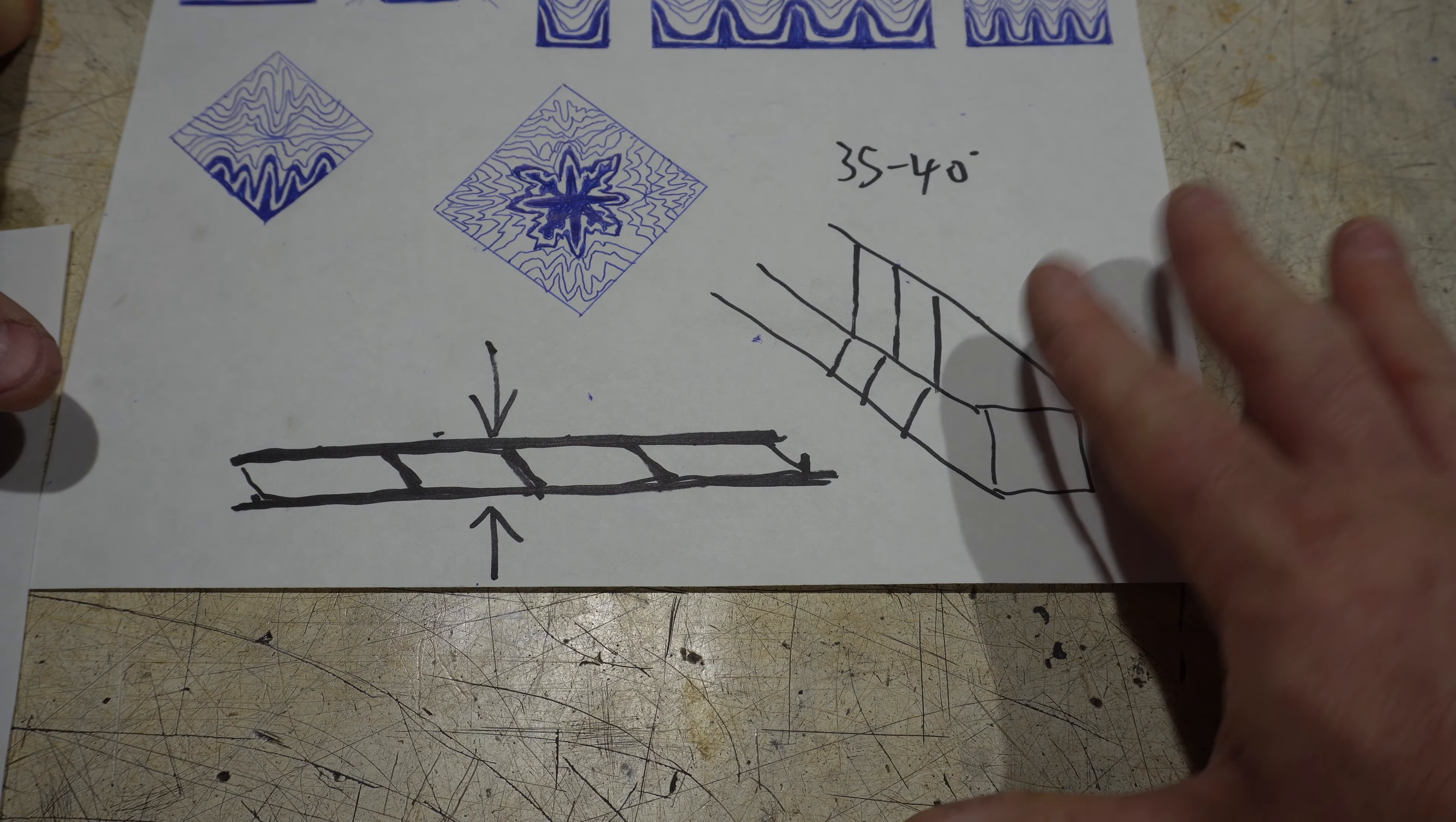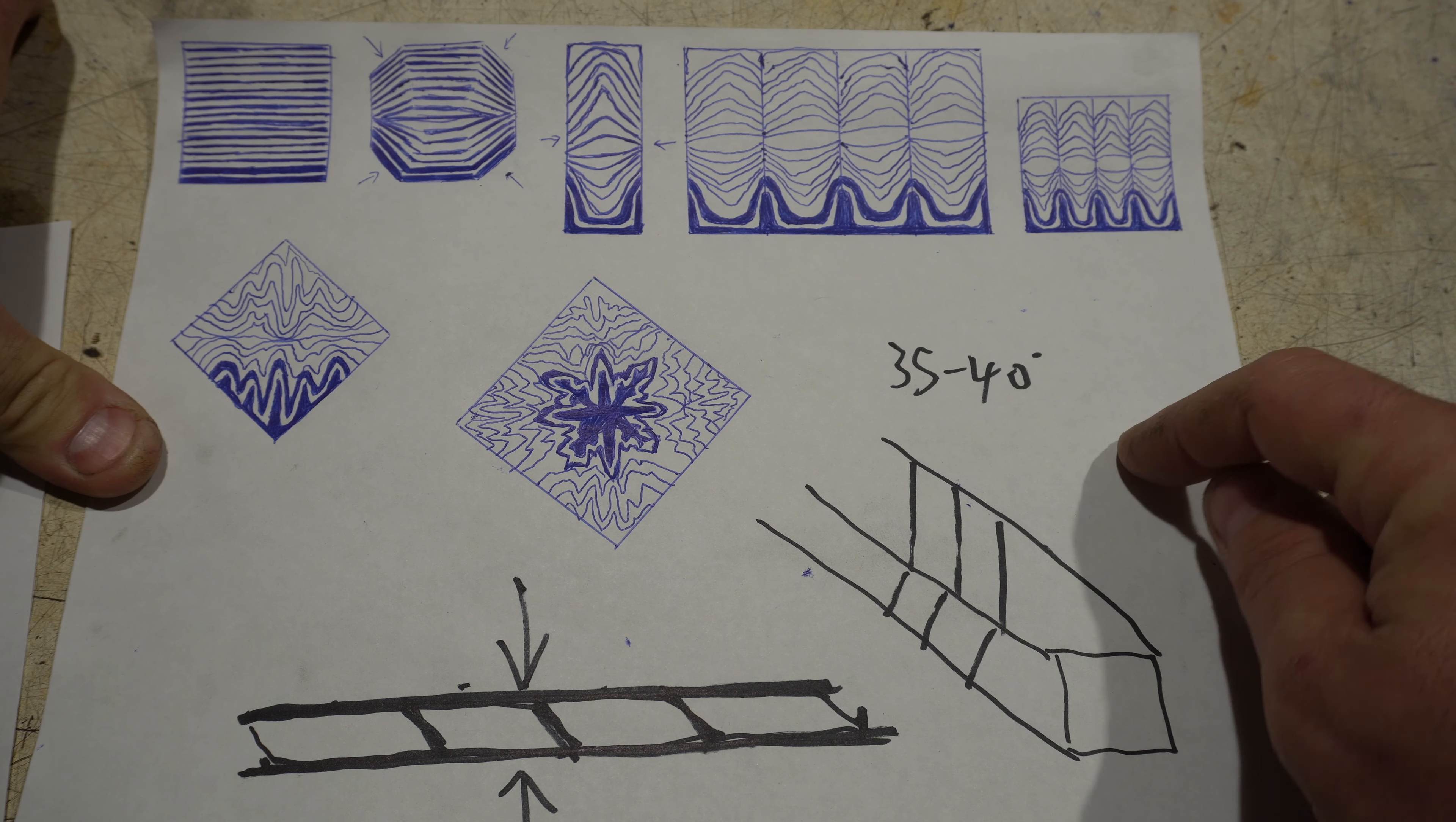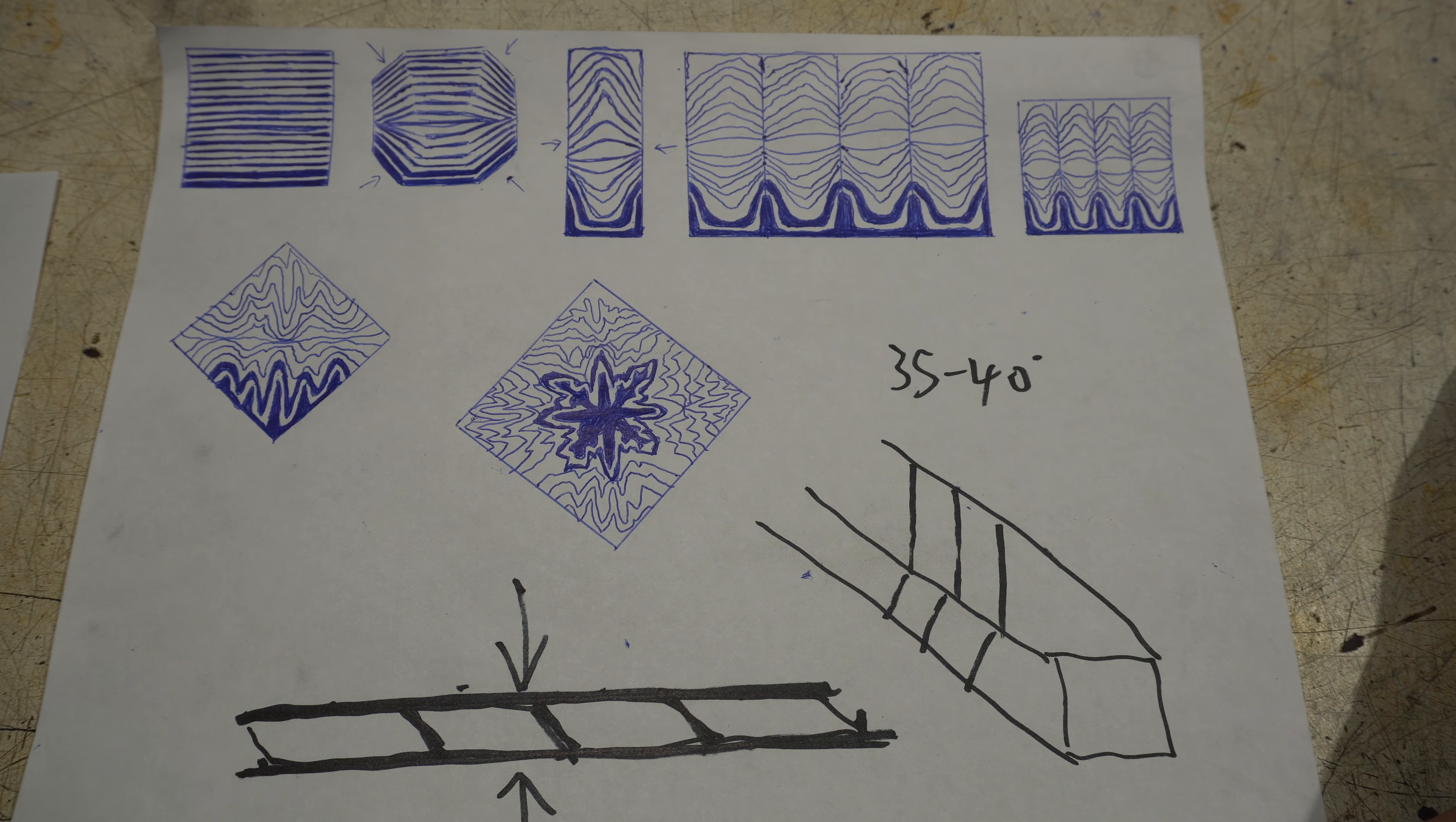So guys, that's the basics of doing mosaic Damascus. Obviously this is very difficult. I won't say impossible, but pretty close trying to do this by hand. You really need a power hammer or a press. You'll see me do a pattern very similar to this in an upcoming knife. So stay tuned, but I wanted to give you guys an intro how to do mosaic Damascus and what are the basics of mosaic Damascus. So I hope that introduction on mosaic Damascus made sense. You're going to see some of it in practice in an upcoming build. So stay tuned for that.